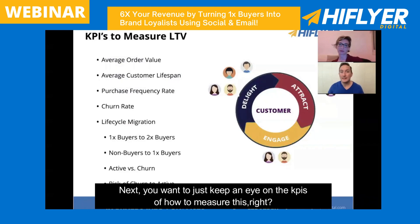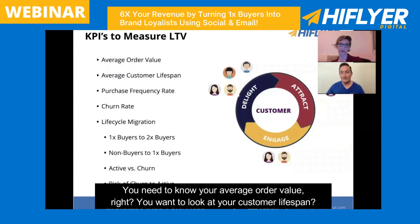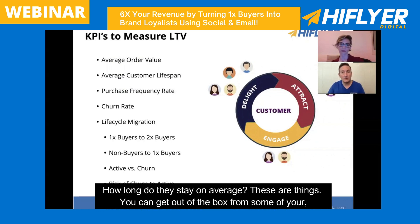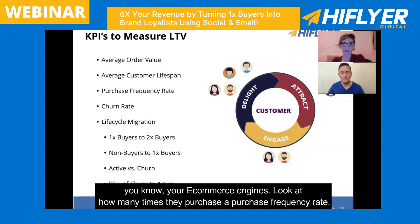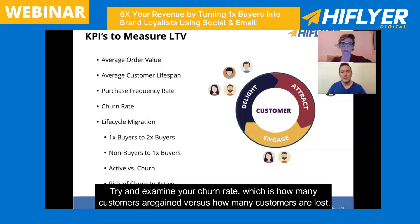You want to keep an eye on the KPIs of how to measure this. You need to know your average order value. You want to look at your customer lifespan — how long do they stay on average. These are things you can get out of the box from some of your e-commerce engines. Look at how many times they purchase — a purchase frequency rate.